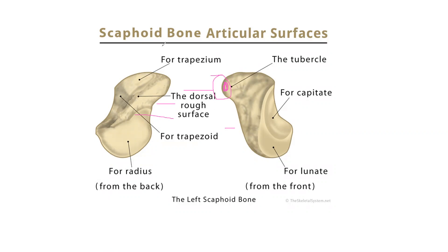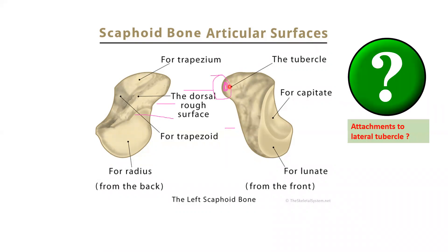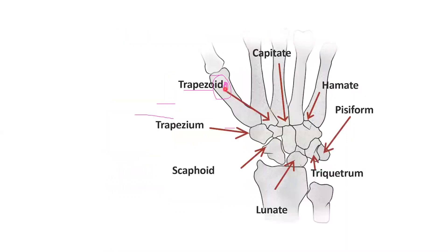The tubercle of the scaphoid is the important characteristic feature to identify whether the scaphoid is the left side or right side. In this image, you can see the wrist joint, the carpal bones, and the metacarpal bones.